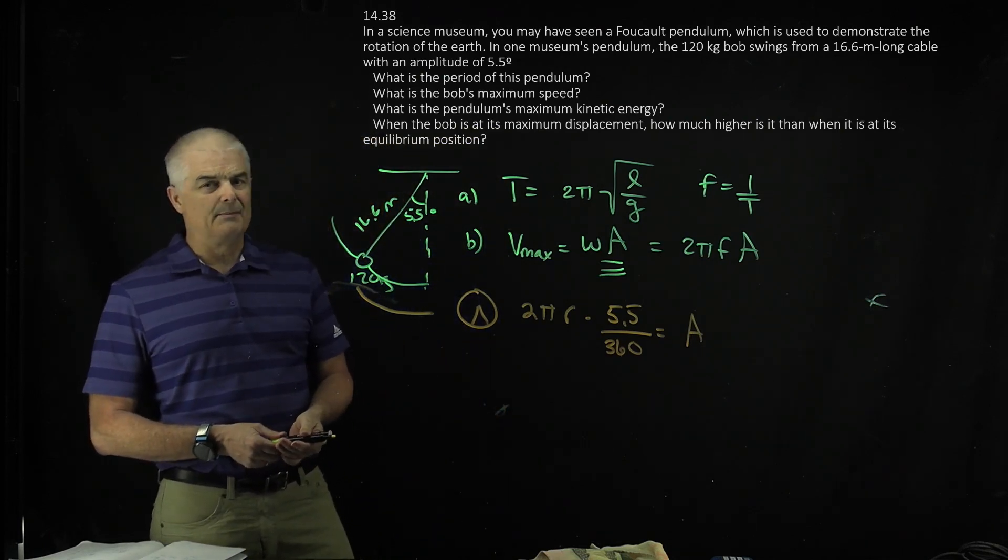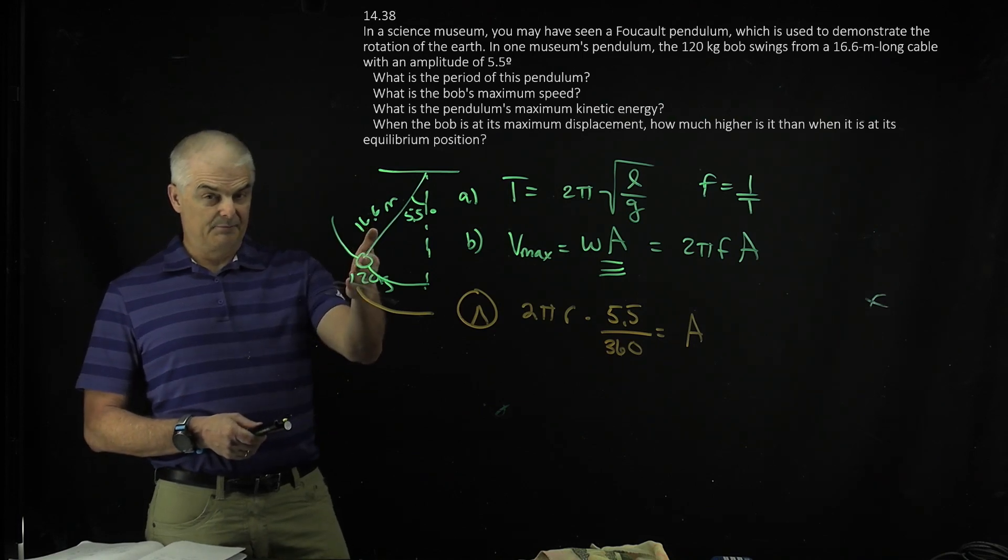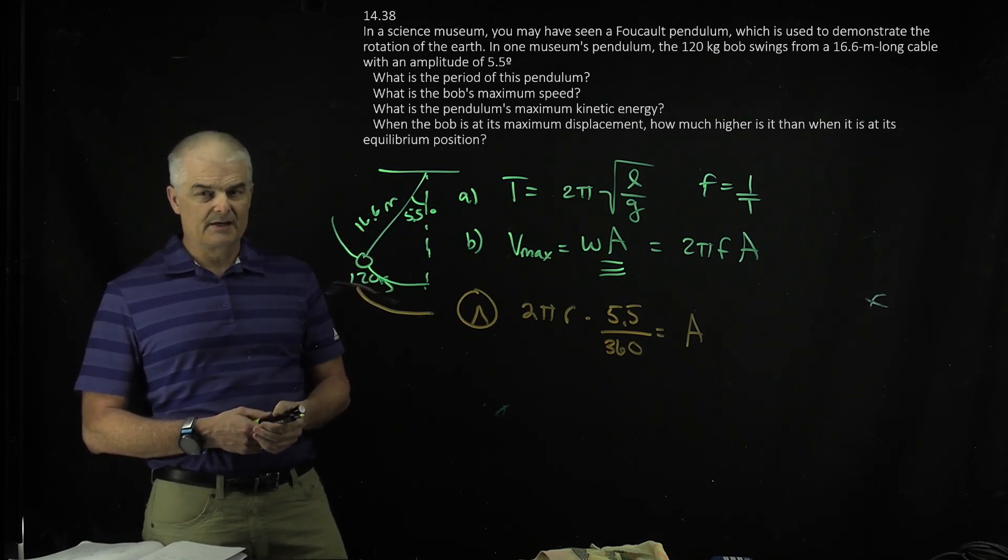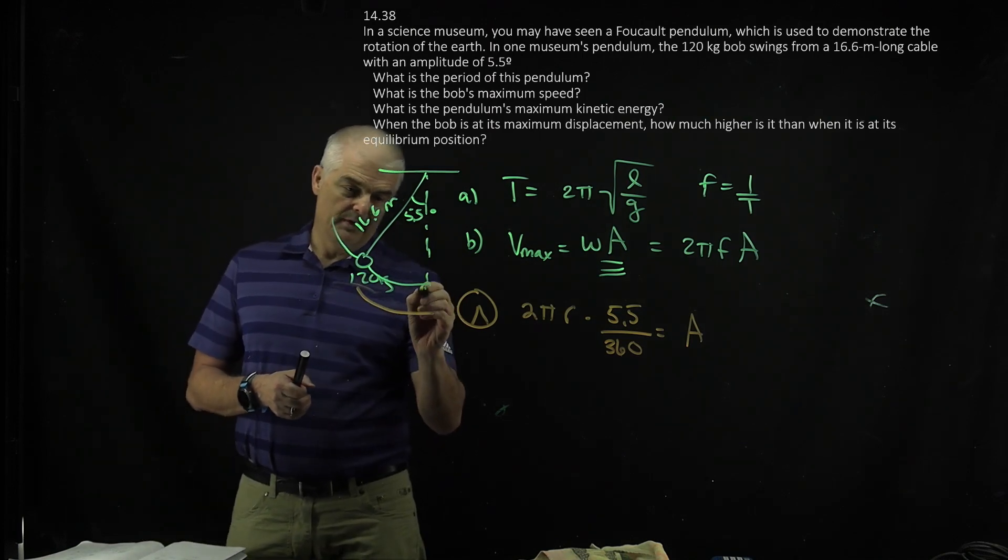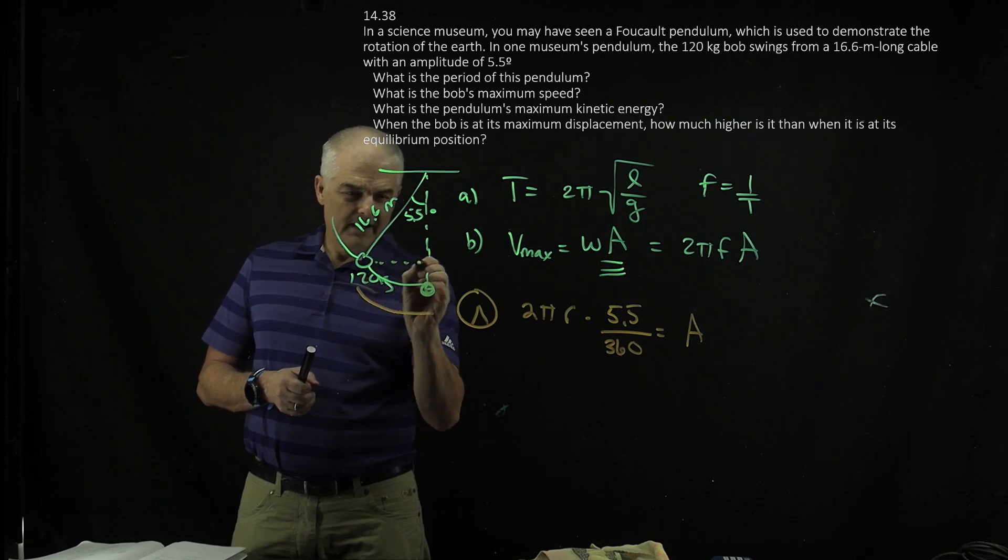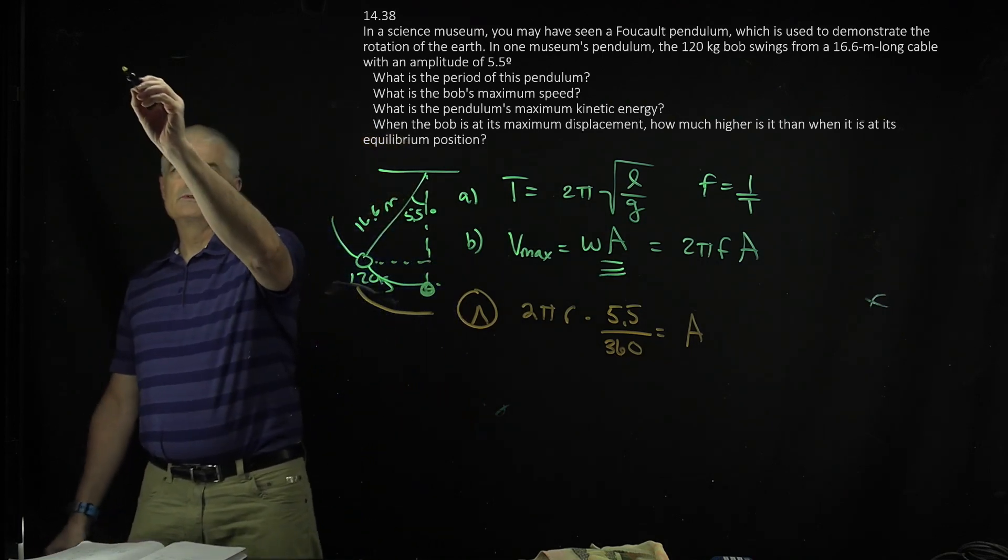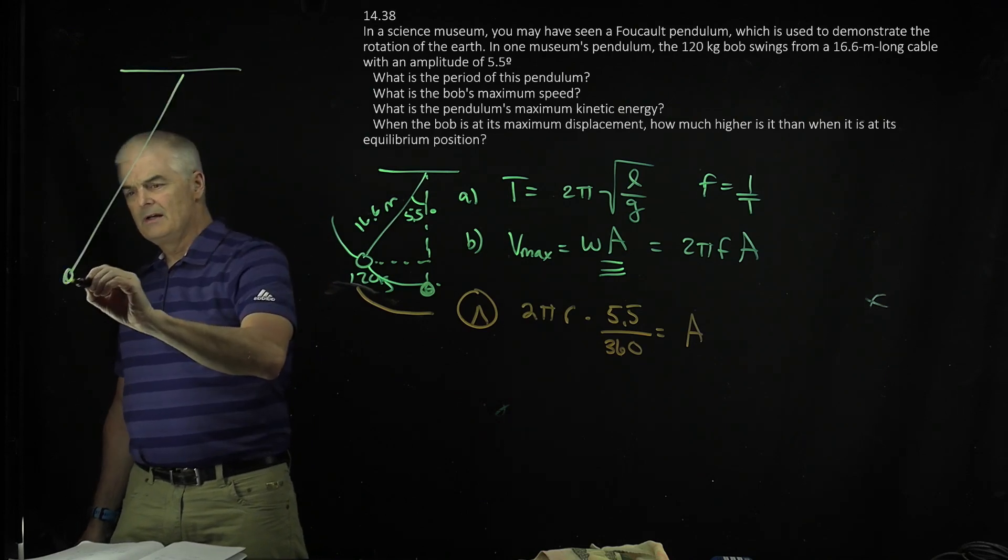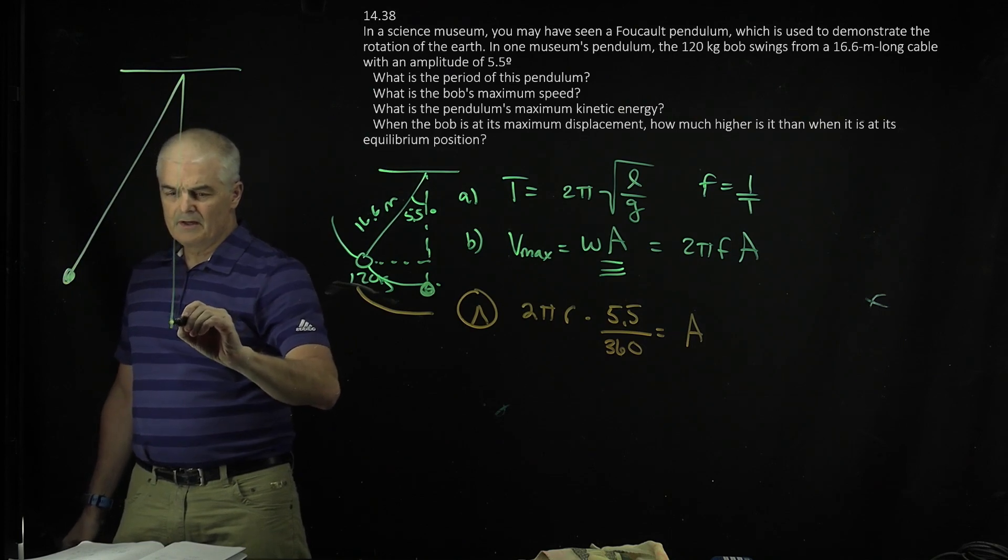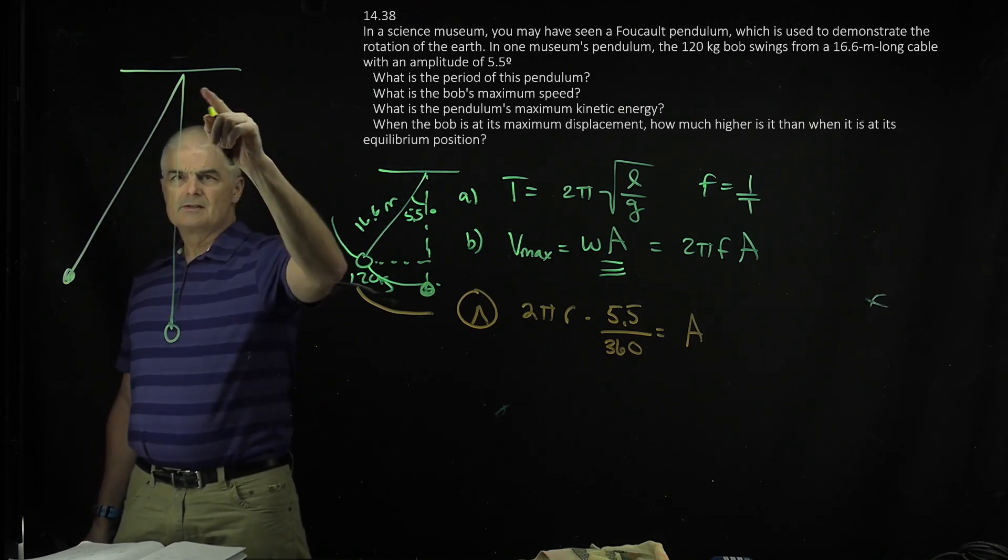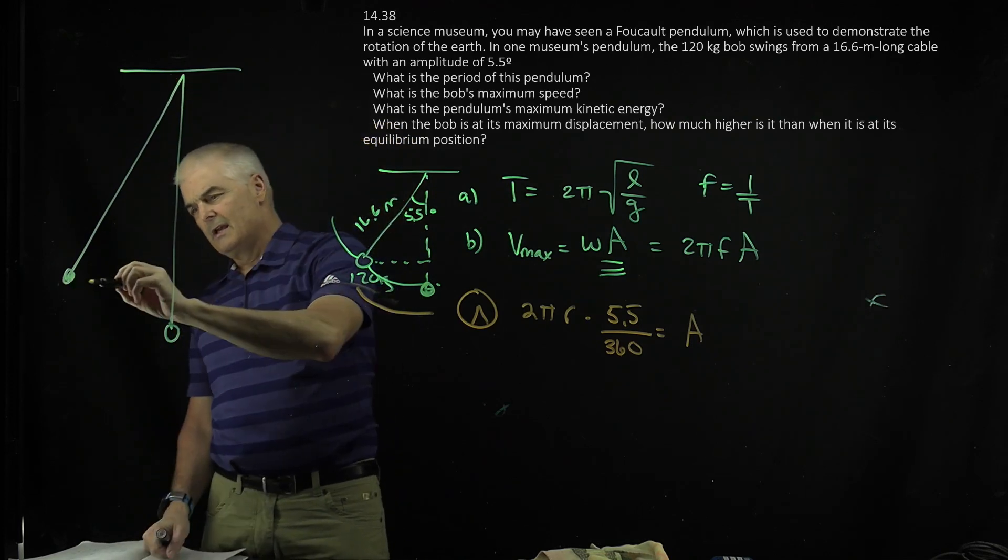And the last question is, when the bob is at a maximum displacement, so that's at 5.5 degrees, how much higher is it than when it was at an equilibrium position? So what they're asking is, at one point it was down here, and it's going to raise just this little bit. Let me redraw this so it's easier to see, because if I have the bob, and it's at that 5 degree angle, and then I draw it this way, these two lengths, I may have not drawn them very well, I'm trying to draw them the same length.